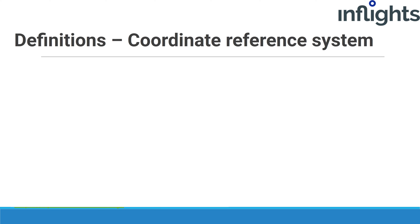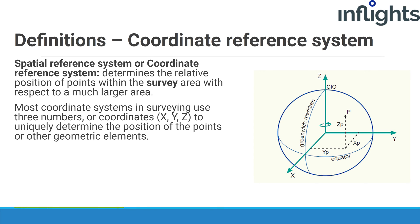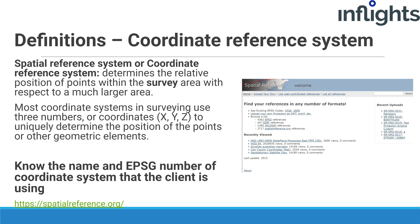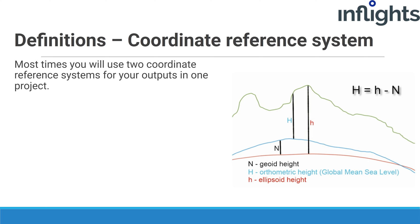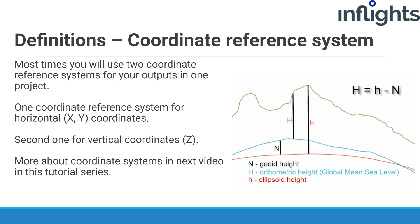A Spatial Reference System or Coordinate Reference System determines the relative position of points within the survey area with respect to a much larger area. Most coordinate systems use three numbers — X, Y, and Z — to uniquely determine the position of points. There are many coordinate reference systems, so you should know which one the client is using. Each known CRS has a name and EPSG number, which you can look up at spatialreference.org. Most times you will use two coordinate systems per project: one for horizontal (X, Y) coordinates and one for vertical (Z-axis) coordinates.